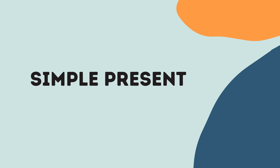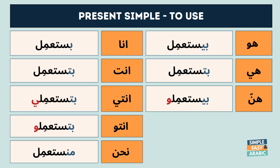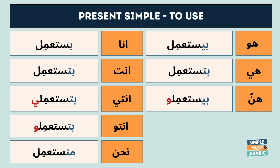Simple present: أنا بستعمل، انت بتستعمل، انتي بتستعملي، انتو بتستعملو، نحن منستعمل، هو بيستعمل، هي بتستعمل، هنن بيستعملو.